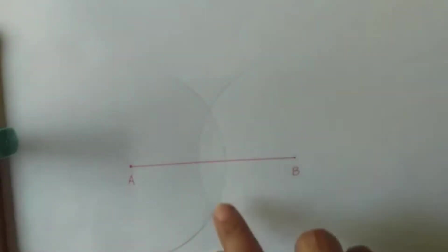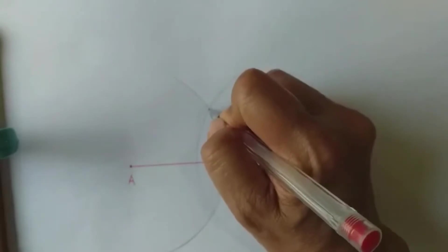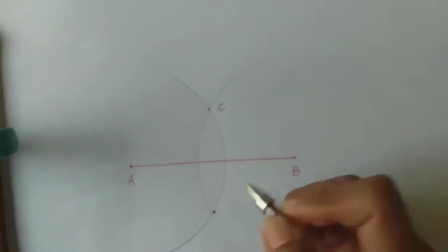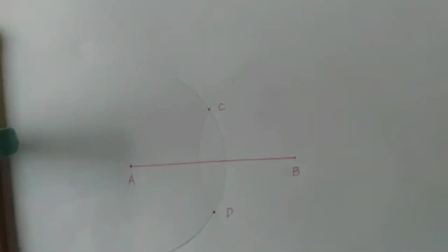Now the arcs intersect above segment AB and another intersection below segment AB. So let us name these points of intersections point C and point D.